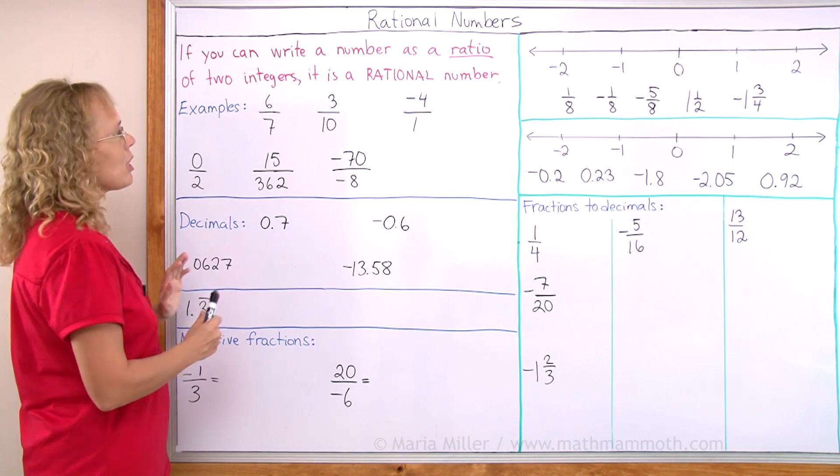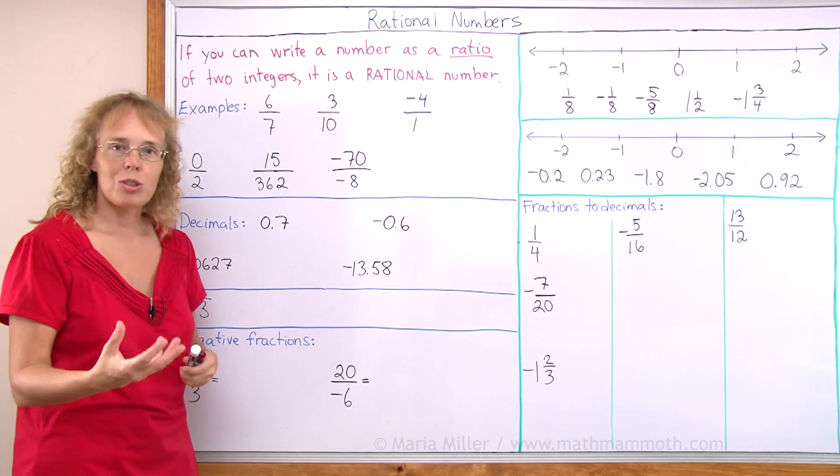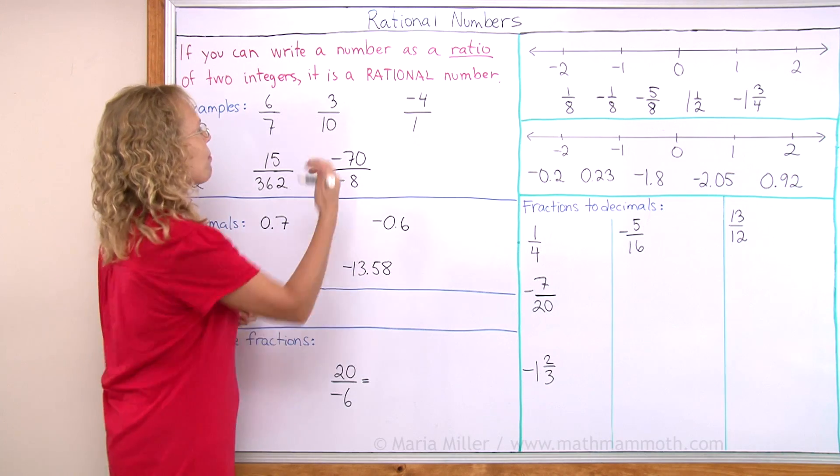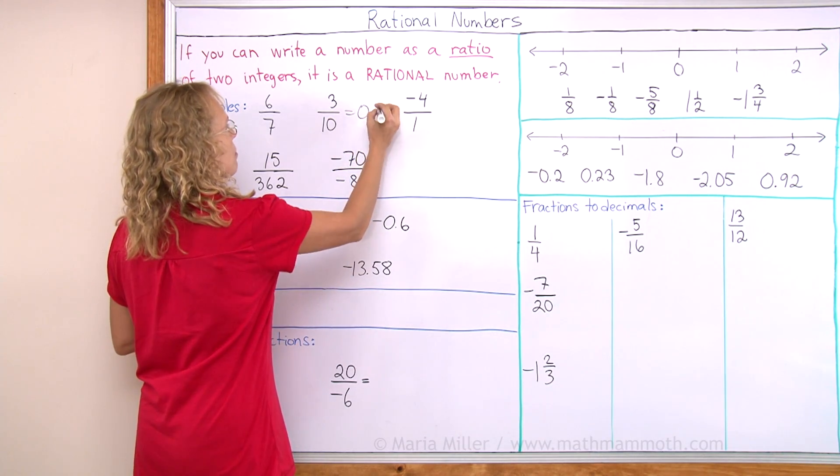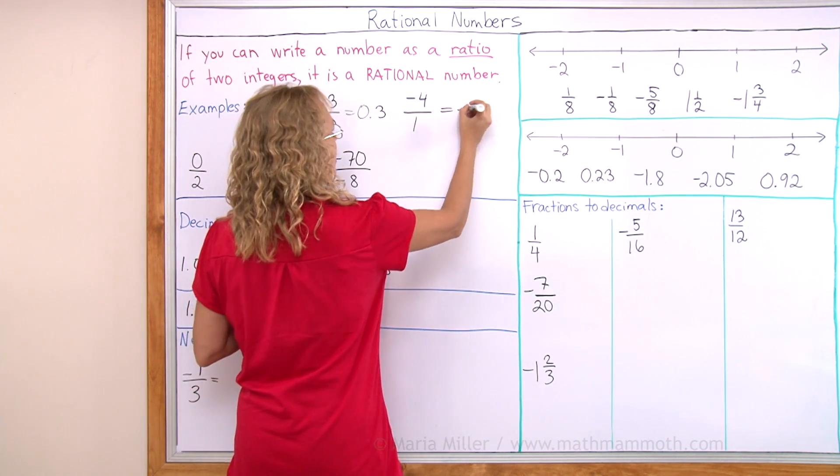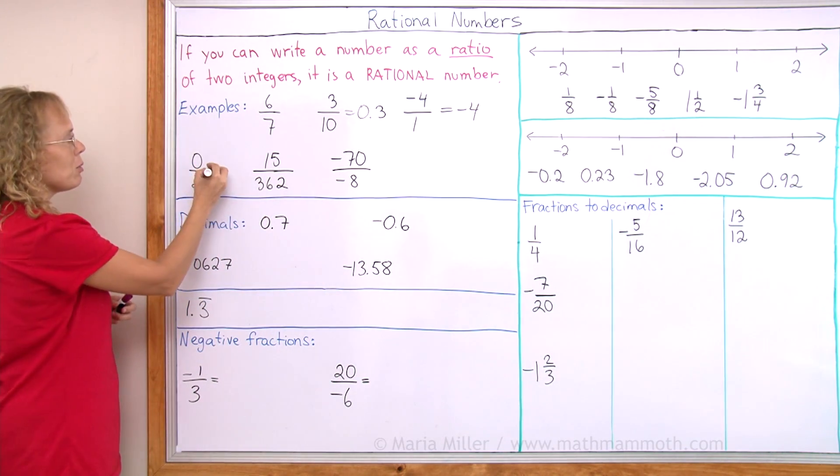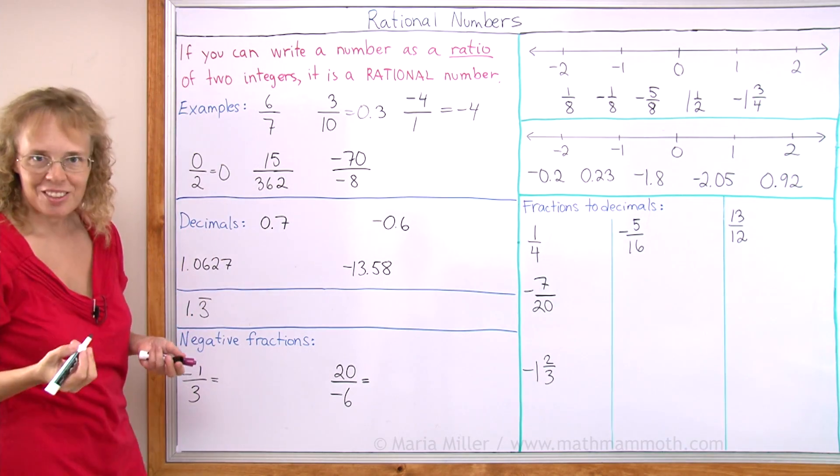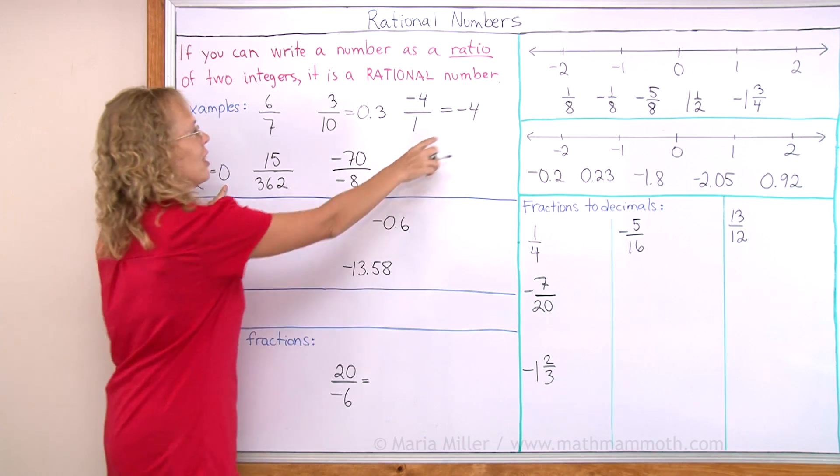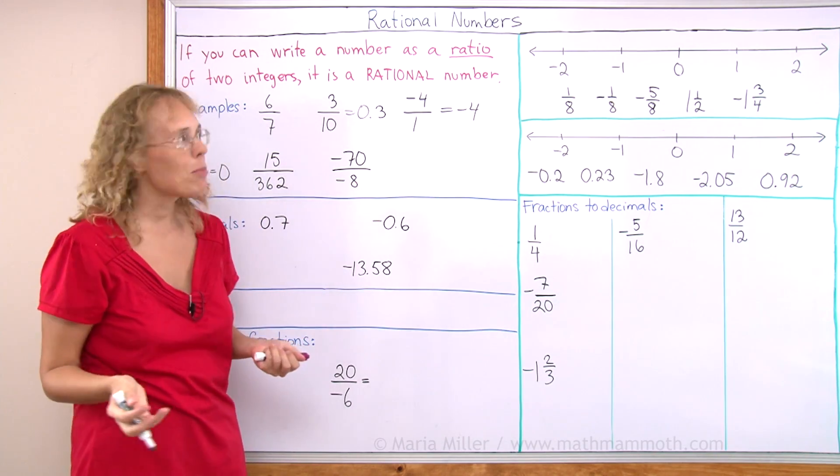Now, some of these we are used to writing in different ways, such as 3 tenths - we are used to writing it as a decimal, like this. And negative 4 over 1, we are used to writing it as negative 4. It's an integer. This one, 0 divided by 2, we usually write it as plain 0. But 0, negative 4, or 2, or 3, or 4, all of your whole numbers, integers, are rational numbers.